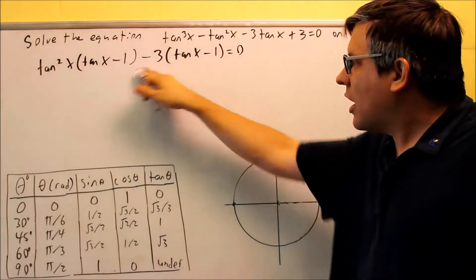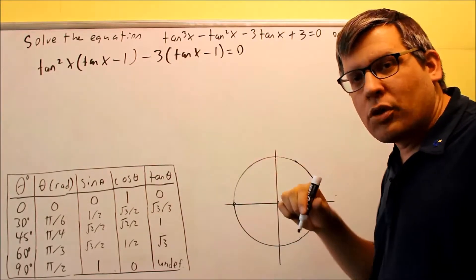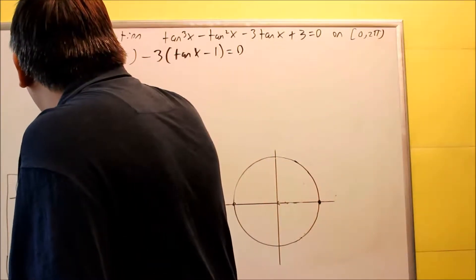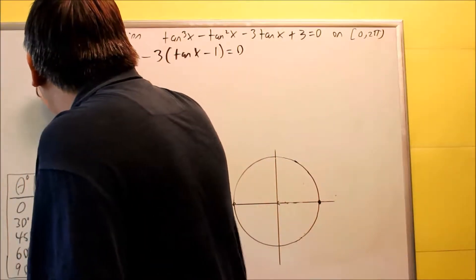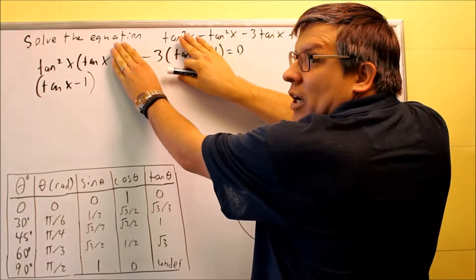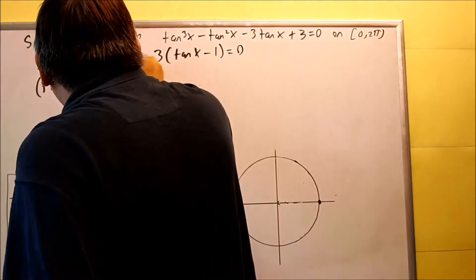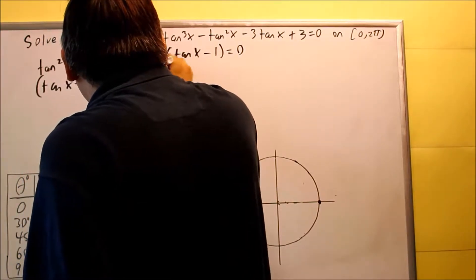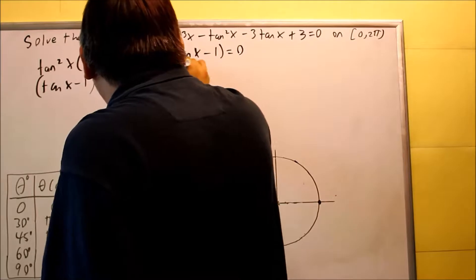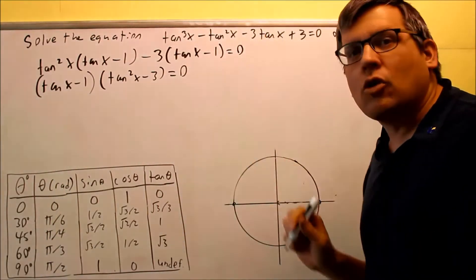So now we have a common factor of tangent x minus one that we can pull out from this whole thing. So I'm going to put the tangent x minus one on the outside. If I get rid of those, then I have tangent squared x minus three left over. That's going to be the second part, tangent squared x minus three. So now this part is correctly factored using the grouping method.